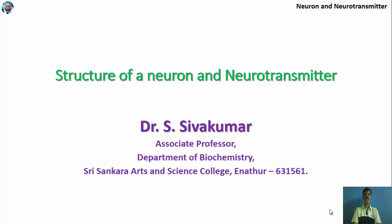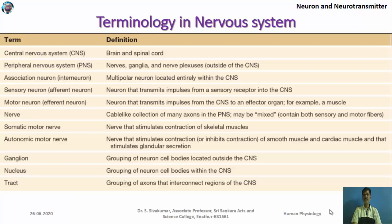Welcome to the third section of the third unit of human physiology paper. The title of the presentation is structure of neuron and neurotransmitter. Before going into this presentation, we will learn about certain terminologies.